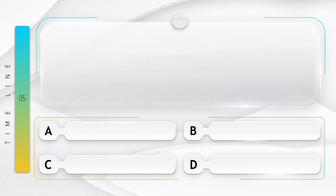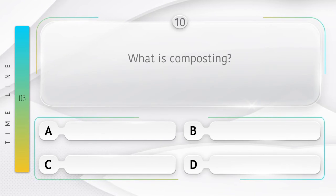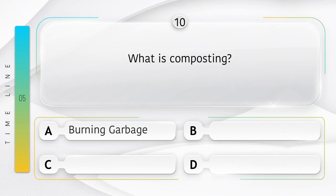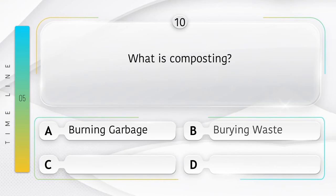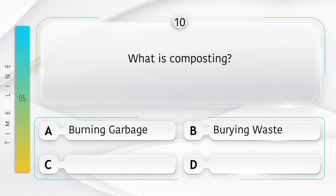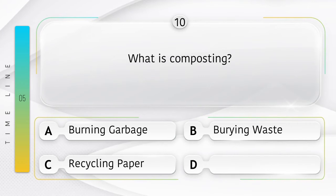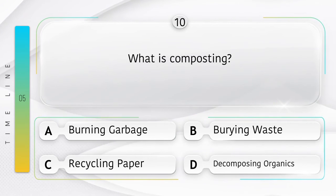What is composting? Option A: burning garbage. Option B: burying waste. Option C: recycling paper. Option D: decomposing organic material.